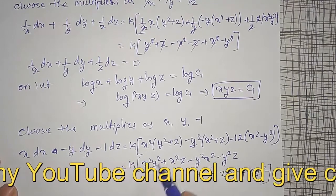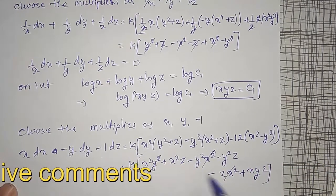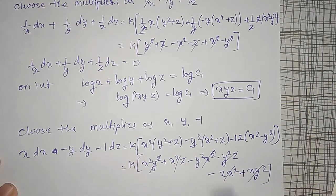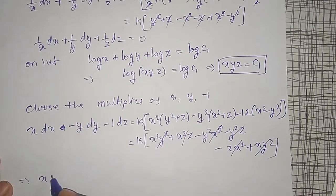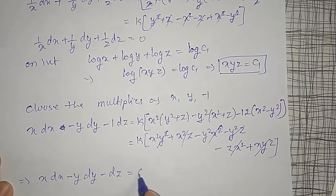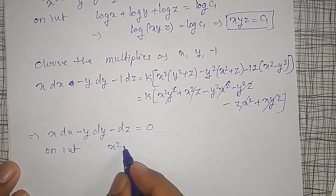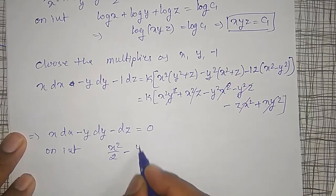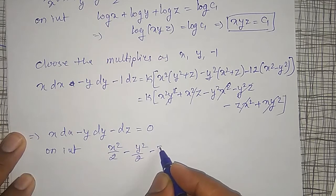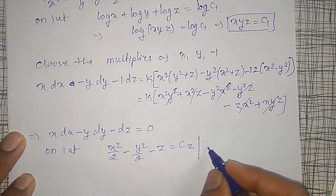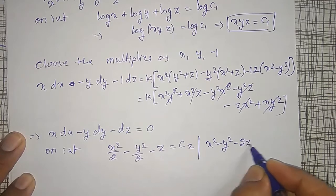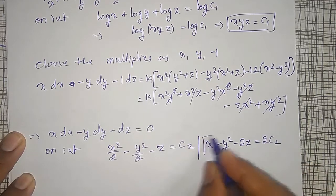Simplifying: X²Y² minus X²Y² cancels, X²Z minus X²Z cancels, and minus Y²Z plus Y²Z cancels, giving zero. Therefore the multiplier choice is correct. X dx + Y dy minus dz = 0. On integration: X²/2 minus Y²/2 minus Z = C2, or equivalently X² minus Y² minus 2Z = 2C2. This is the second solution.